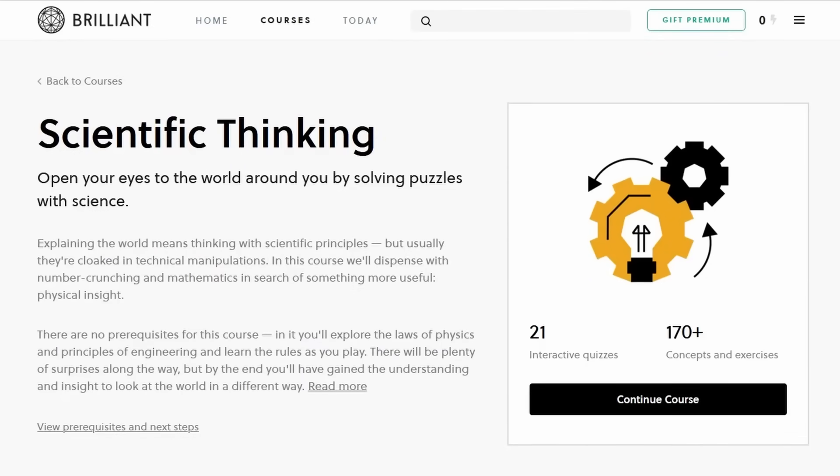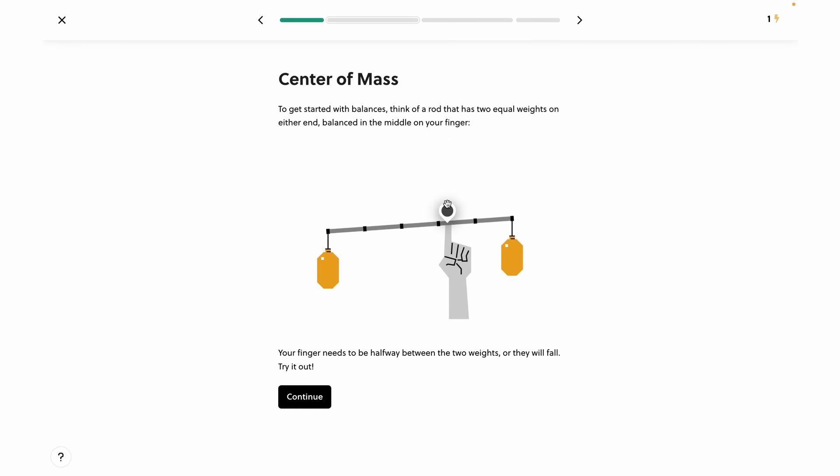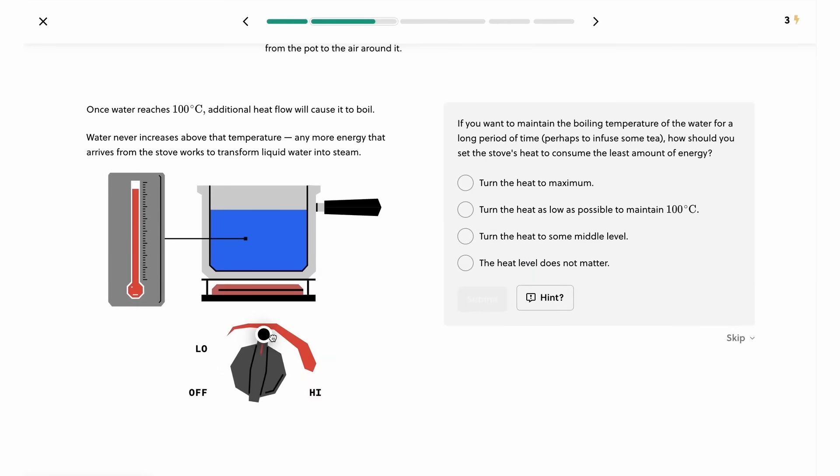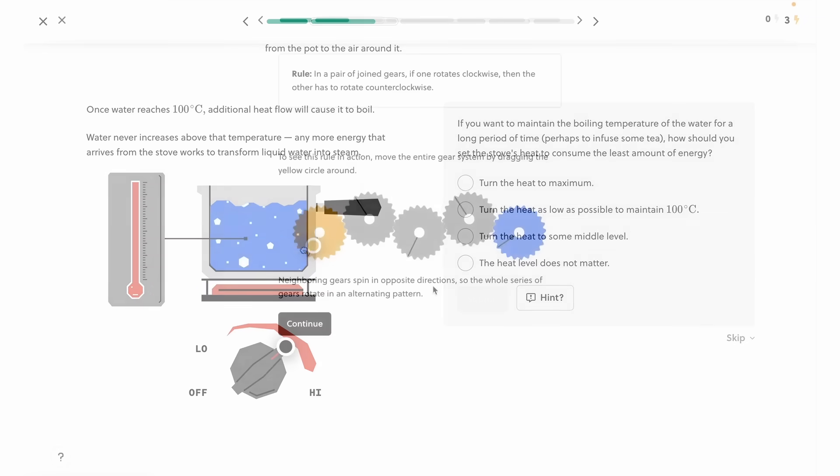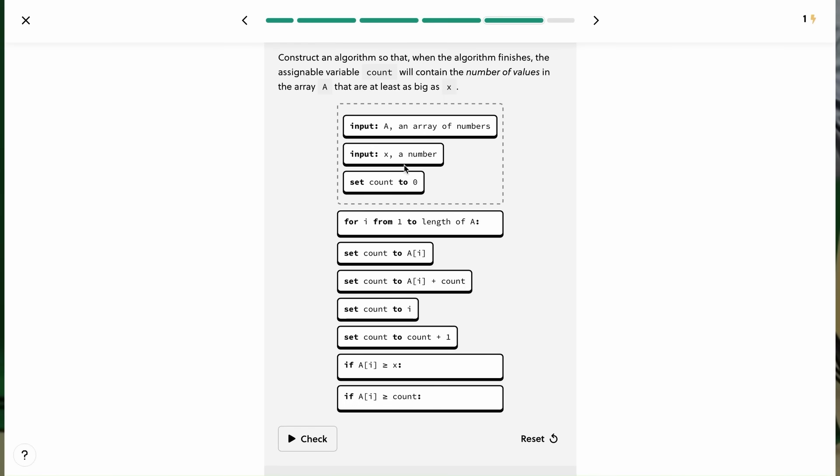Another great course on Brilliant, if you'd rather start with some of the more fundamental concepts in science, is scientific thinking. It's a great way to brush up on essential concepts, in an intuitive way, without being overwhelmed with the math. Brilliant has something for everyone, with thousands of lessons over a variety of STEM courses, with new content added each month.